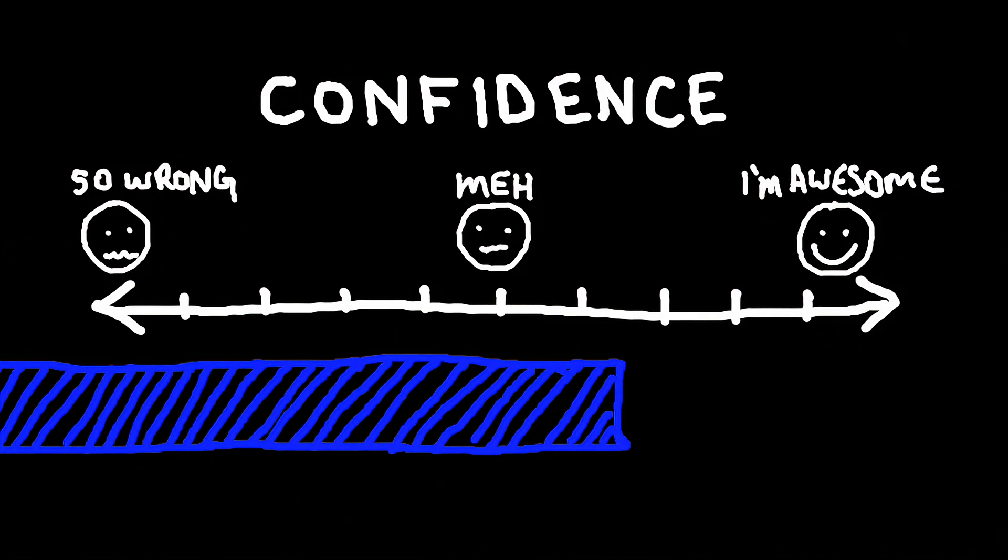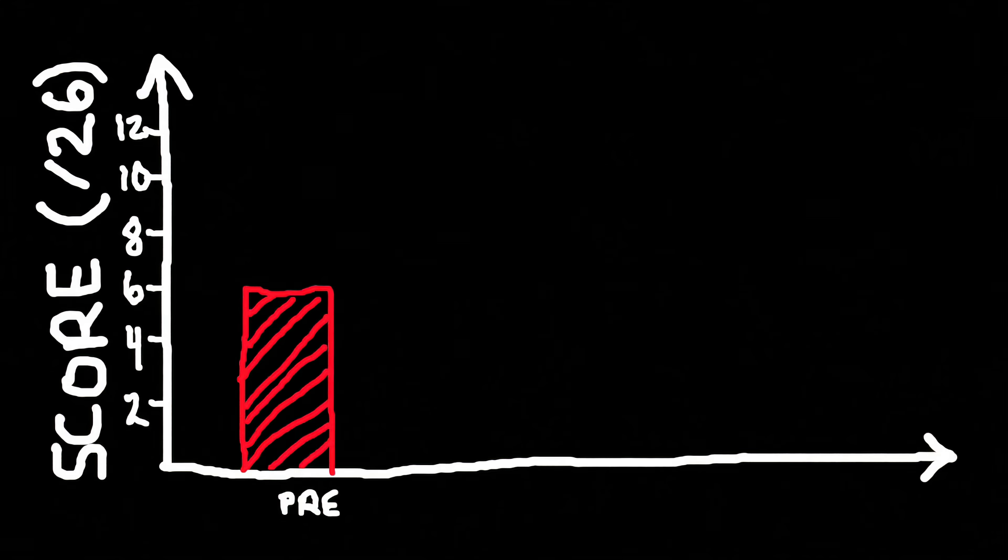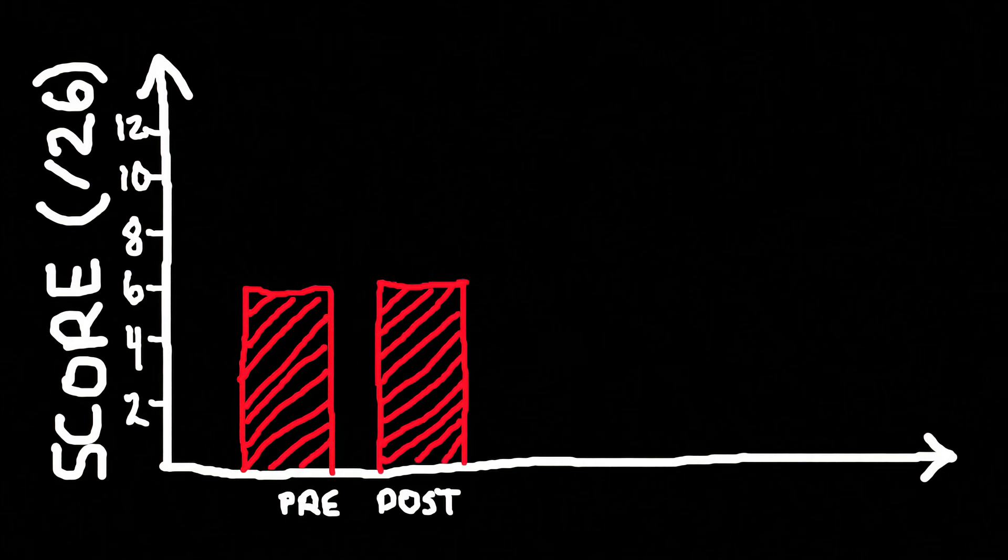So what about how much they learned? On the pretest, the average score was 6.0 out of 26. And after the video, the average was 6.3. What was going on? I dug deep in interviews to find out. It turned out students did not even correctly remember what was presented in the video that they had seen a few minutes earlier.